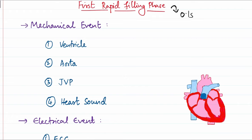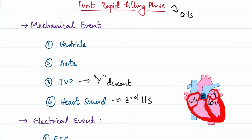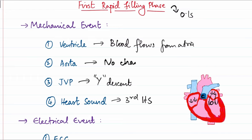The first rapid filling phase lasts about 0.1 seconds. The mitral and tricuspid valves open and blood flows from the atria into the ventricles. Vibration of the valve leaflets during this rapid inflow corresponds to the third heart sound. Atrial pressure descends, corresponding to the 'y' descent in JVP. Blood flows from the atria into the ventricle, and there are no significant aortic changes during this phase. On the ECG, this corresponds to the region between the T wave and the P wave.